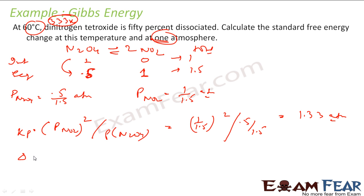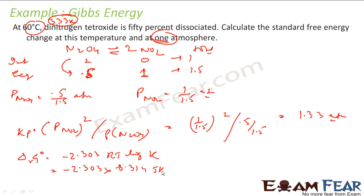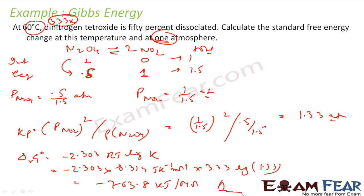Using delta G-naught equals minus 2.303 RT log K, with R = 8.314 J/K/mol, T = 333 K, and Kp = 1.33: solving gives delta G-naught ≈ minus 63.8 kJ/mol. Since Kp was not given, we derived it from the equilibrium data. We will learn more about finding K in the next chapter on equilibrium.